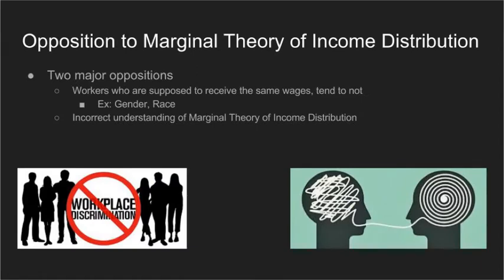Although the marginal productivity theory of income distribution is a well-established part of economic theory, it is a source of controversy. There are two main objections to this theory. The first is that in the real world, we see large disparities in income amongst workers who, in the eyes of some, should be receiving the same payment — the best example being differences in average wages between genders and races. The second is that many people wrongly believe the marginal productivity theory of income distribution gives a moral justification for the distribution of income, implying that the existing distribution is fair and appropriate. This often leads people who believe the current distribution is unfair to reject this theory.